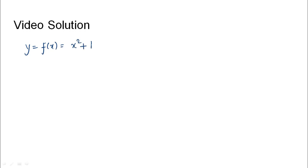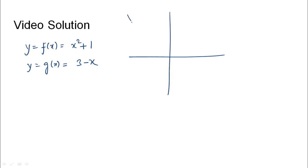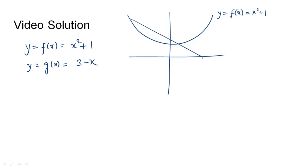In this case, y equals f(x) is x squared plus 1, and the second function y equals g(x) can be written as 3 minus x. Plotting the two functions on the coordinate axis: the first function f(x) looks like y equals x squared plus 1, and the second function g(x) is a straight line. Note that the figure is not to scale.